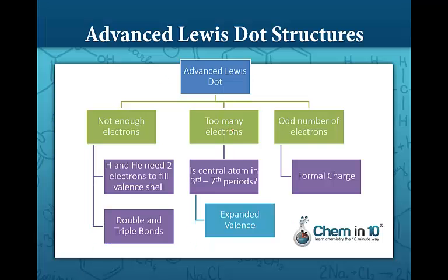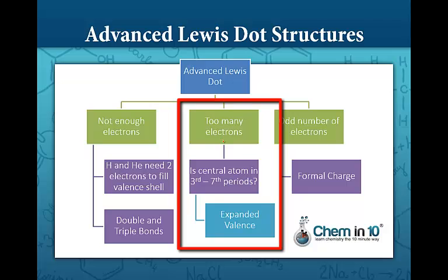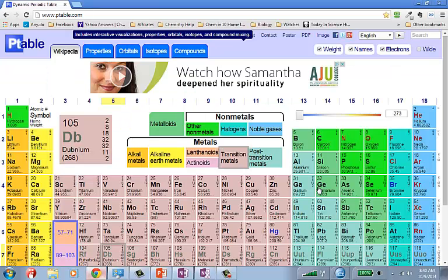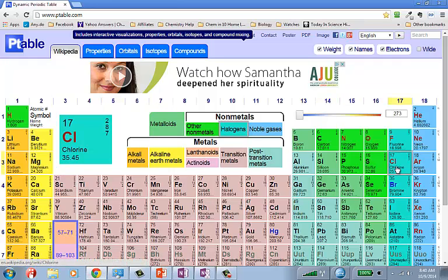Recall that if you have too many electrons around the central atom, you check if the central atom is in the third to seventh periods. Remember that if the central atom is in the third to seventh periods, it can have an expanded valence because some of those d orbitals kick in and they can hold other electrons in addition to the eight. So when we look at the periodic table, we see that chlorine here is in the third period so it can have an expanded valence.